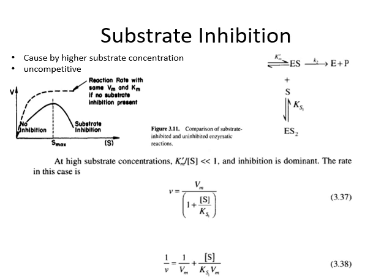The last type is substrate inhibition. This situation happens when the substrate concentration is extremely high. When this occurs, the substrate itself will bind to the enzyme-substrate complex, forming an enzyme-substrate-substrate (ES2) complex. The Michaelis-Menten model for this becomes Vmax divided by one plus substrate concentration over the substrate inhibition constant, Ks.